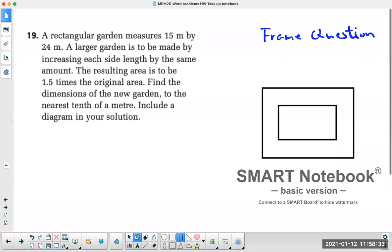So here it says a rectangular garden measures 15 meters by 24 meters, and a larger garden is to be built by increasing each side length by the same amount. So originally, you have the small rectangular garden that's 24 by 15.